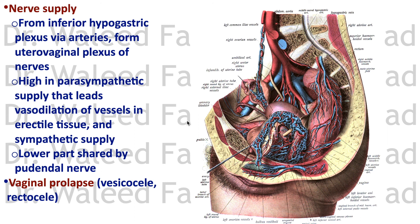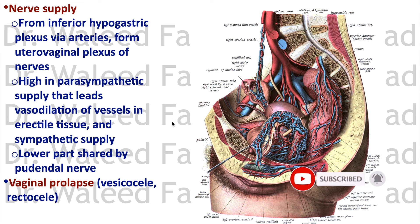In females after multiple deliveries, weakening of the ligaments can cause vaginal prolapse, in which the vagina drops down and protrudes out of the body in an inverted fashion, taking with it the urinary bladder as a cystocele or the rectum as a rectocele. This concludes the lecture on the female external genitalia. Thank you very much for watching.